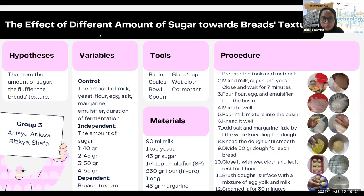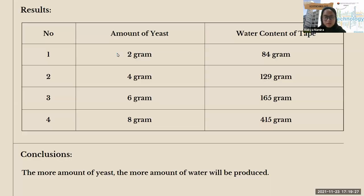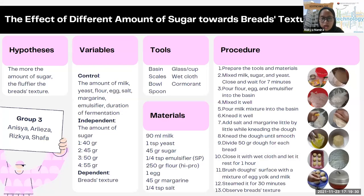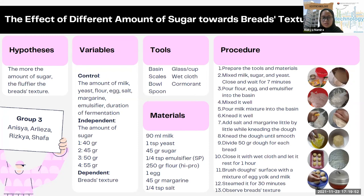Mix it well. Then pour the milk mixture into the basin. Next, knead it well. Add salt and margarine little by little while kneading the dough. Knead the dough until smooth. Divide 50 grams of dough for each bread. Close it with a wet cloth and let it rest for 1 hour. Then brush the dough surface with a mixture of egg yolk and milk. Steam it for 30 minutes. Finally, observe the bread's texture.